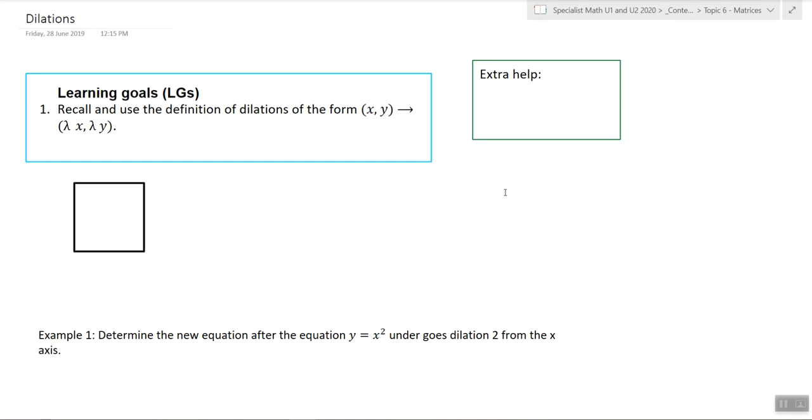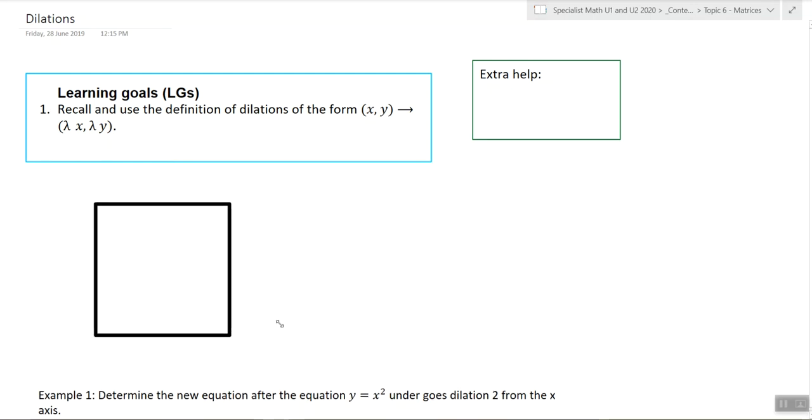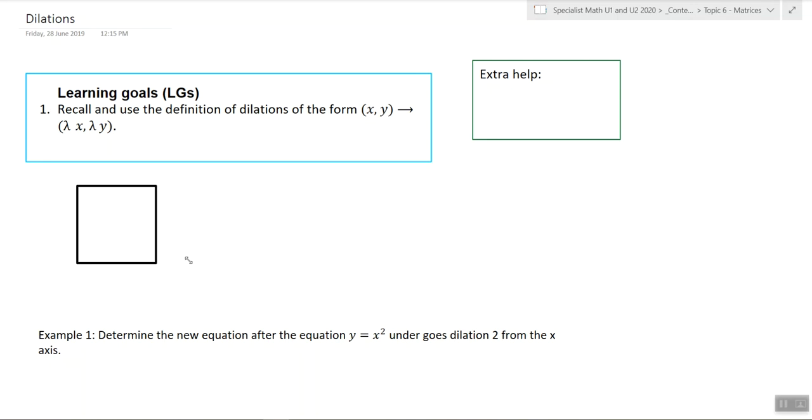So you can make a matrix, multiply it by a point and it will move that point. So if we take the corners of a square, make those points, multiply them by the matrix, it could make the square bigger or it could make the square smaller by this dilation transformation.